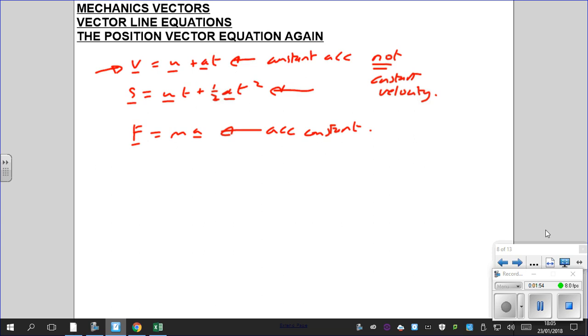And then finally we had r equals r0 plus vt. And this is for constant velocity. So velocity must be constant, not acceleration. Acceleration, there must be no acceleration. The acceleration must equal 0, or if it's a vector, (0,0), for us to use this formula.